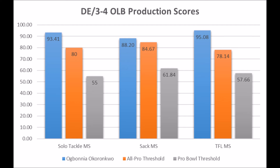All those production scores pretty much hit the high-end thresholds in terms of all-pro and pro-bowl potential. The only thing to note is that production data is one piece of the puzzle — we still have yet to see how Ogbanya tests, and we haven't gotten into his age profile to determine if he's a prodigy or just a long-term starter. But at least from a production standpoint, there are lots of positive marks, and he should be considered one of the better edge rushers in the class given his production profile playing at Oklahoma against tough competition.